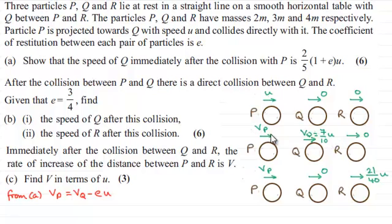We never found out what Vp was, although in part A we had this equation that Vp equaled Vq minus Eu.